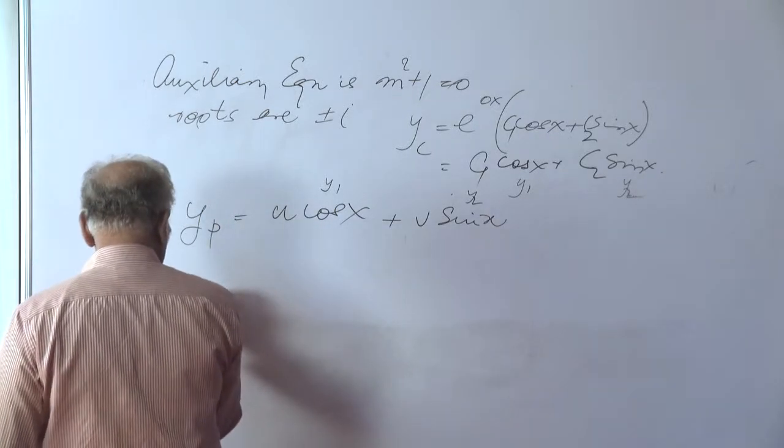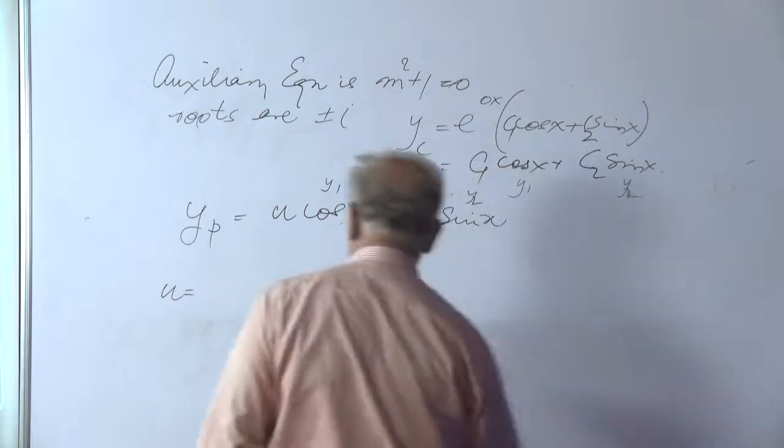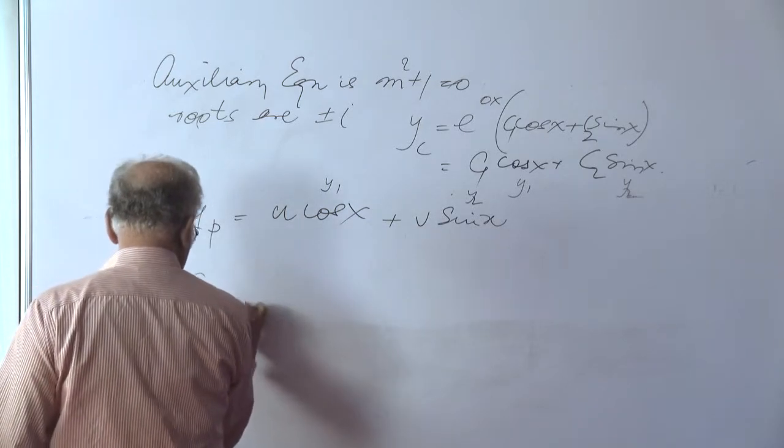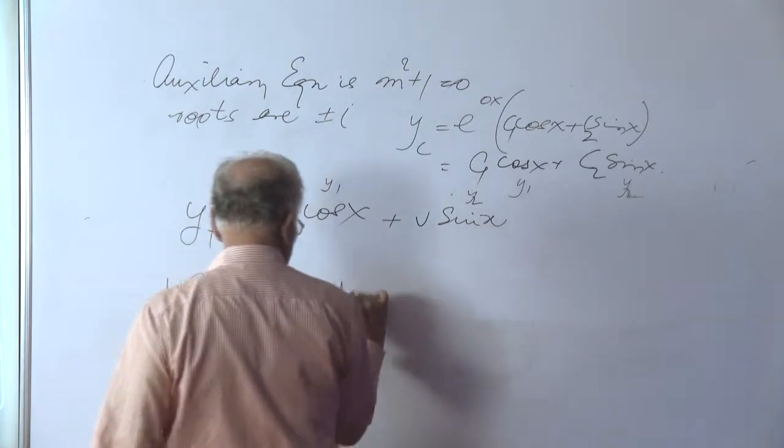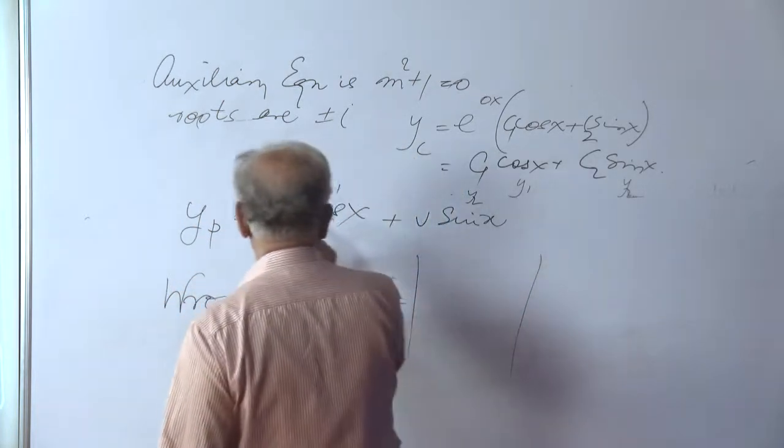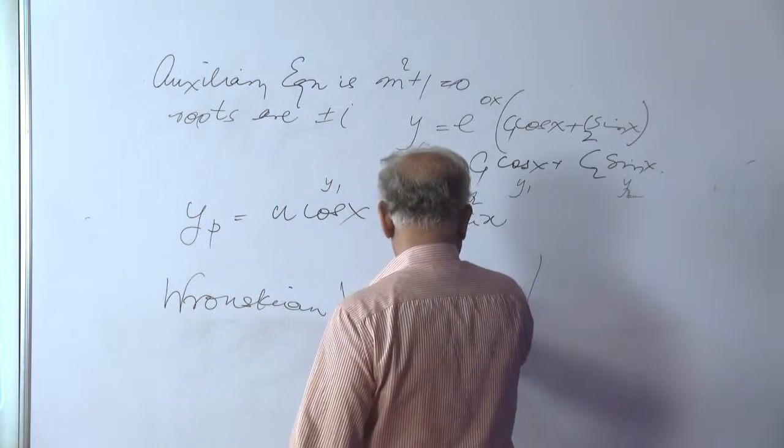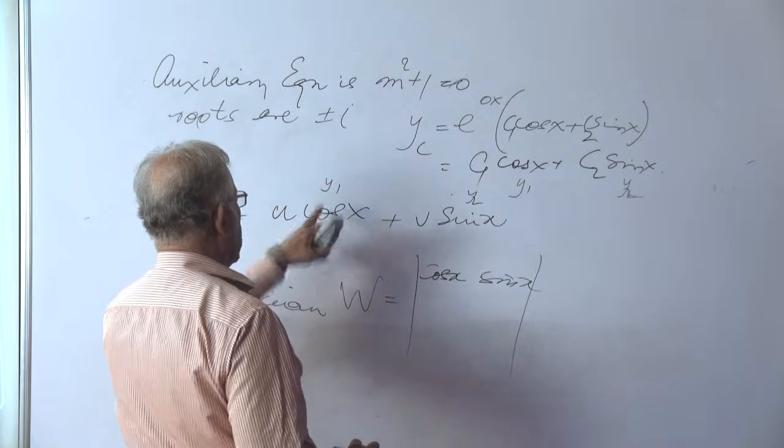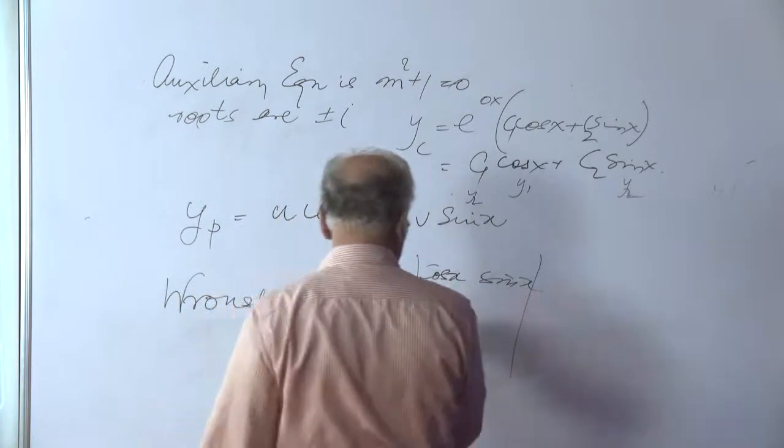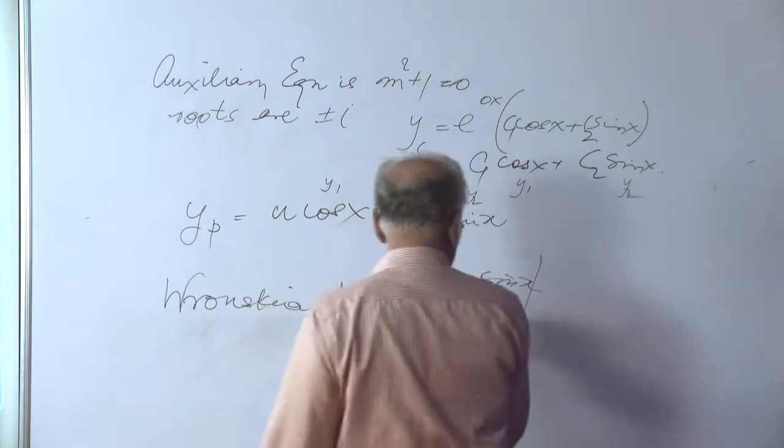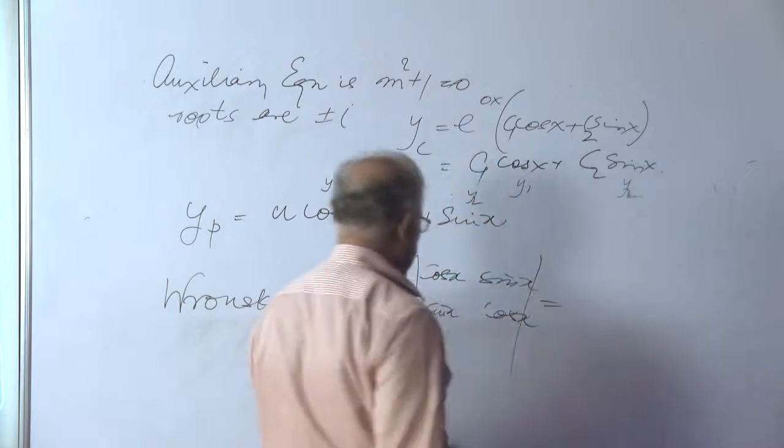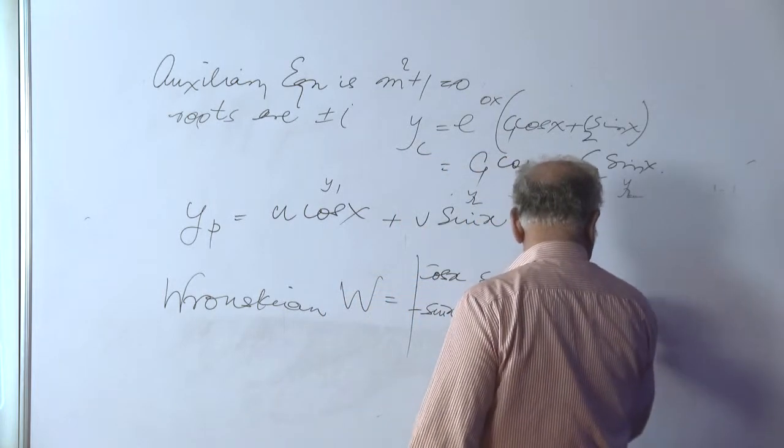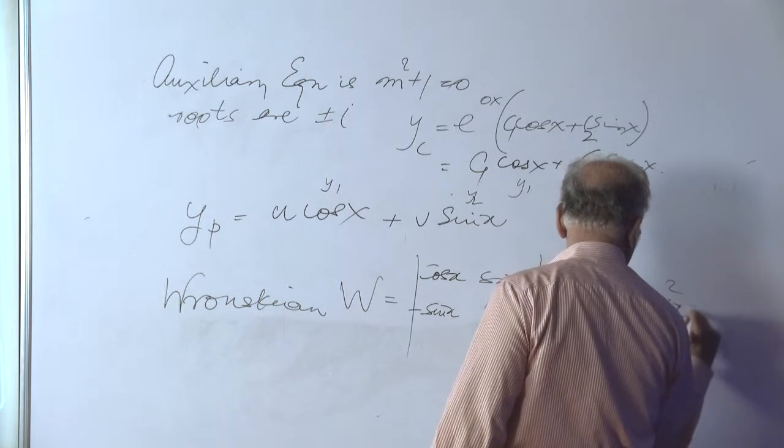Now we said that u is equal, first of all we evaluate the Wronskian. In this particular equation, the Wronskian w is equal to determinant y1, y2. So cos x and sin x, y1 and y2. Then y1 prime is minus sin x and this prime is cos x. So this determinant evaluates to cos x minus of minus sin x. So that is nothing but cos squared x plus sin squared x and that is equal to 1.